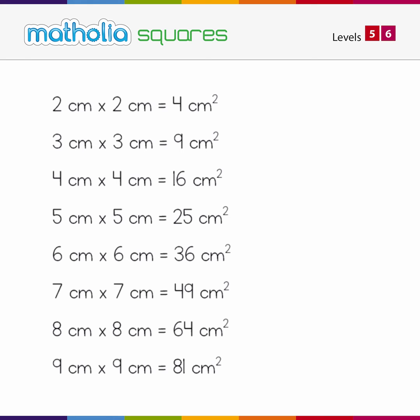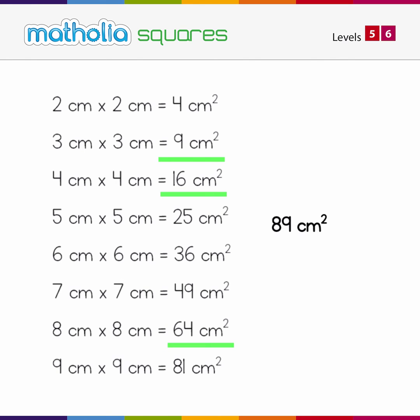Let's try 9, 16, and 49. The sum of these areas is 74 square centimetres. This is less than the area we need, so let's choose a larger area. Changing from 49 square centimetres to 64 square centimetres, our sum is now 89 square centimetres. This is the area we are looking for.